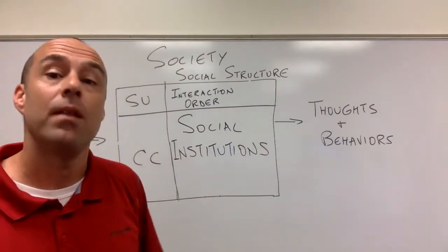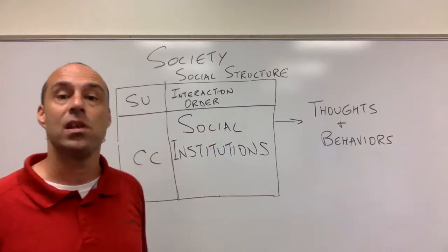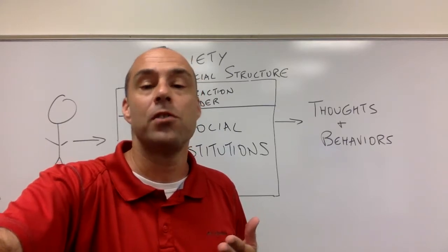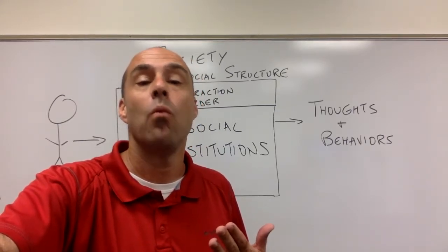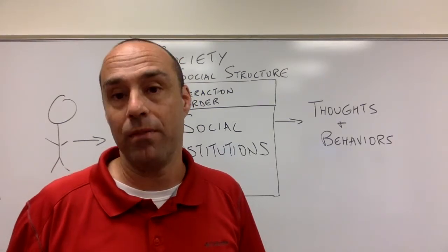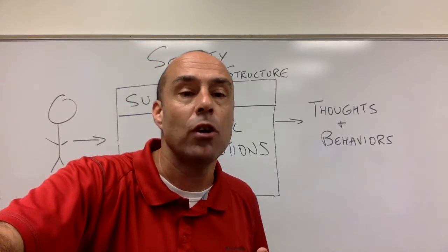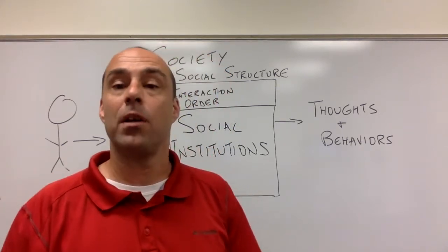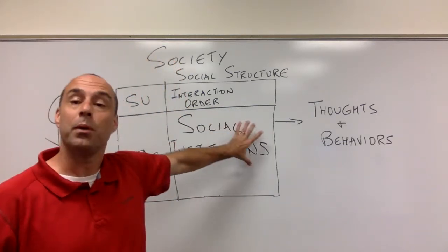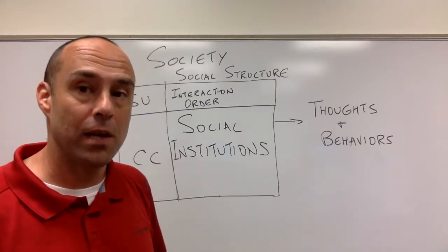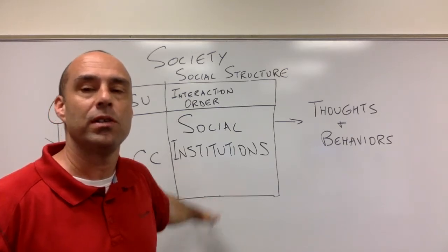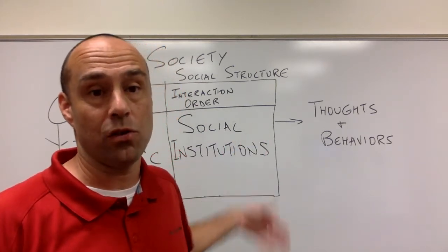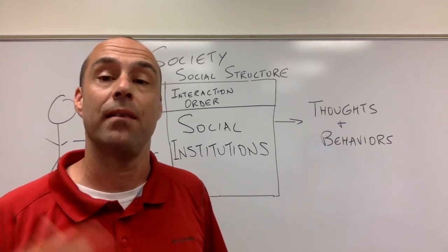Where we're going to spend our time the rest of the semester is social institutions — the formal situations we are in, where we are directly meeting one of the needs of society. All of this social structure discussion is a lead-up to dealing with one particular part: formal situations, which we'll call social institutions, because that's where organizations live. Next video, which will be our last one for unit one, we will get to what social institutions are about and how organizations fit within that.